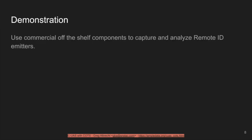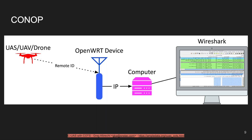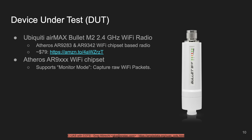We're going to demonstrate the use of commercial off-the-shelf components to capture and analyze remote ID emitters. A remote ID device will transmit its remote ID packets. We'll capture and intercept these packets using a device running OpenWrt, then pipe that through to a computer where we use Wireshark to analyze the data. The device under test is a Ubiquiti AirMax Bullet M2, a 2.4 GHz single-chain Wi-Fi radio.